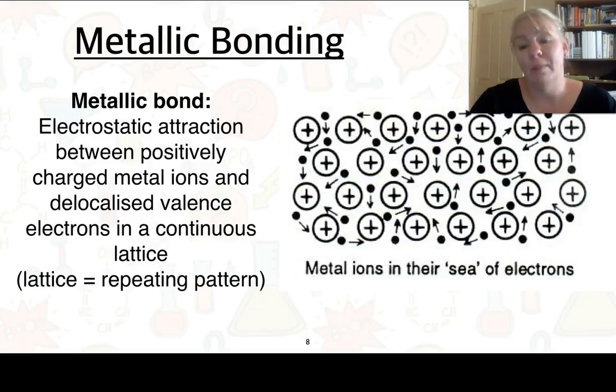Here's another diagram showing what we call the sea of electrons. From this you can see that you have your positive ions and your electrons here are the black dots. They're able to be moving around and what we end up with is a repeating pattern or sometimes called a lattice.